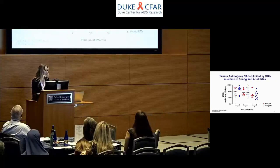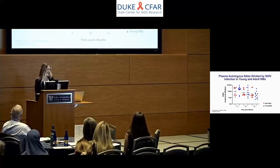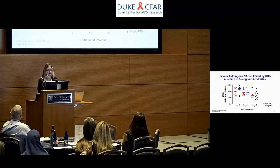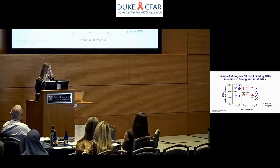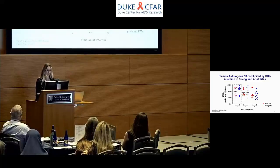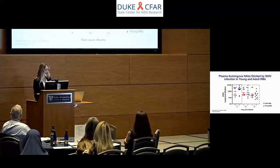The graph on this slide summarizes the plasma autologous neutralizing antibody responses elicited by SHIV infection in young and adult macaques. The x-axis shows time points post-infection, and the y-axis shows neutralization titers reported as ID50 values, where a higher number indicates better neutralization. Each dot represents a single animal — young macaques in blue and adults in red. Young macaques had higher geometric mean titers against the autologous SHIV at month 6 post-infection, while both groups had similar geometric mean titers at later time points up to month 18.